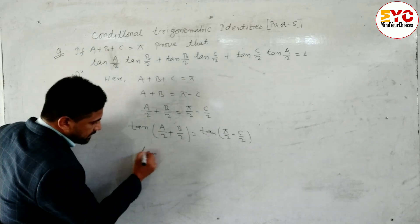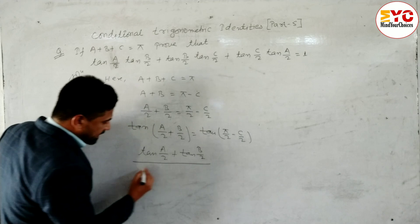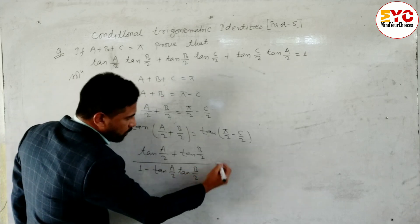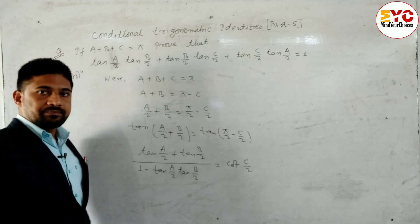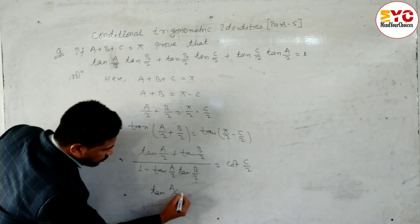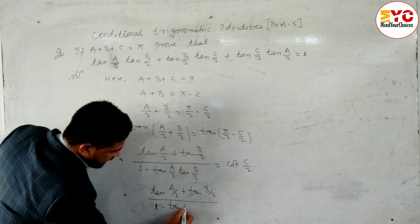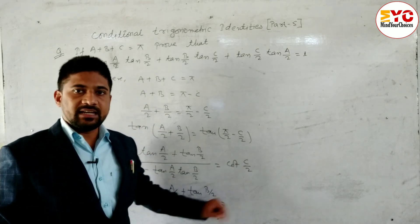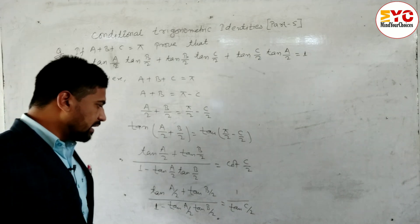So we write: tan(a/2) plus tan(b/2) divided by 1 minus tan(a/2)tan(b/2) is equal to cot(c/2), because 90 minus c/2 in the first quadrant converts tan to cot. Now cot(c/2) means 1 divided by tan(c/2), so we rewrite the right side as 1 over tan(c/2).